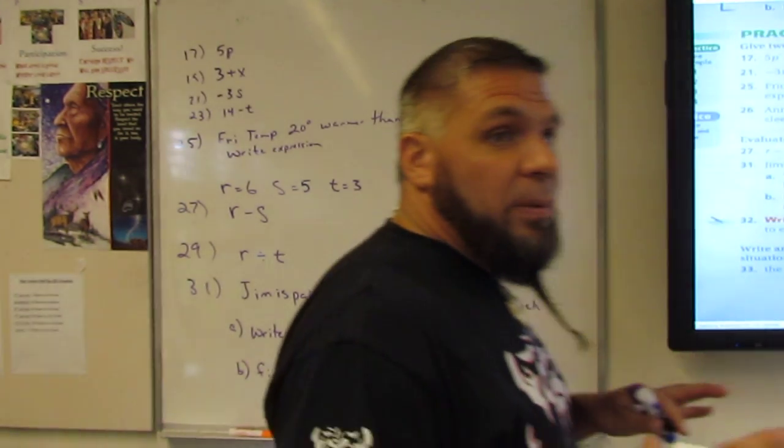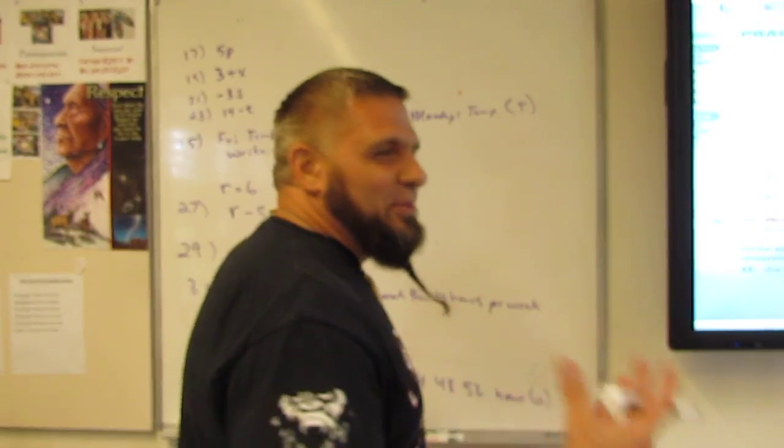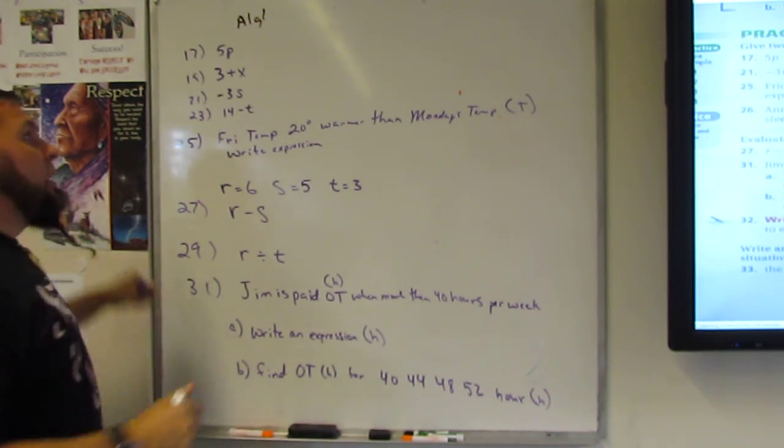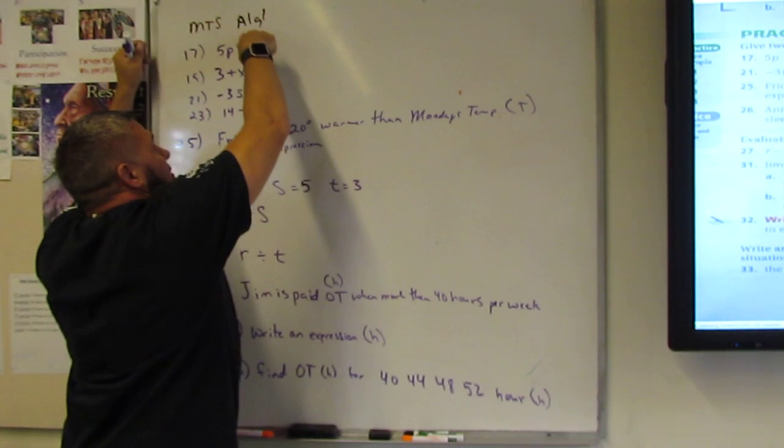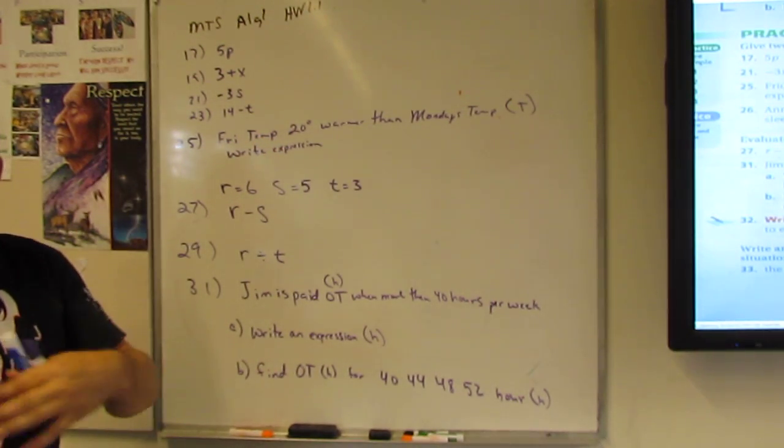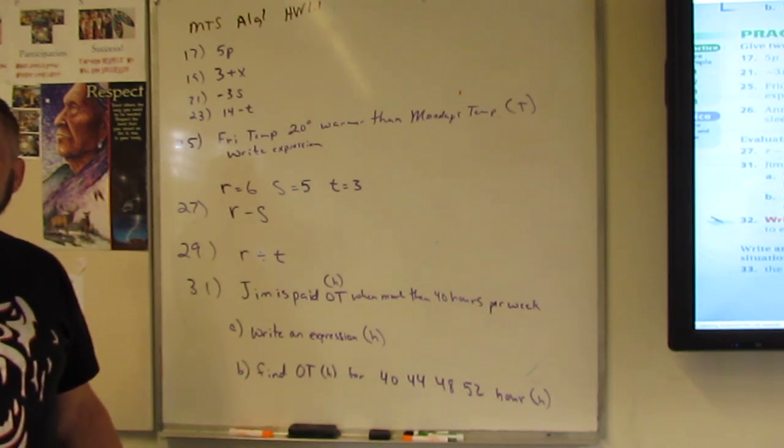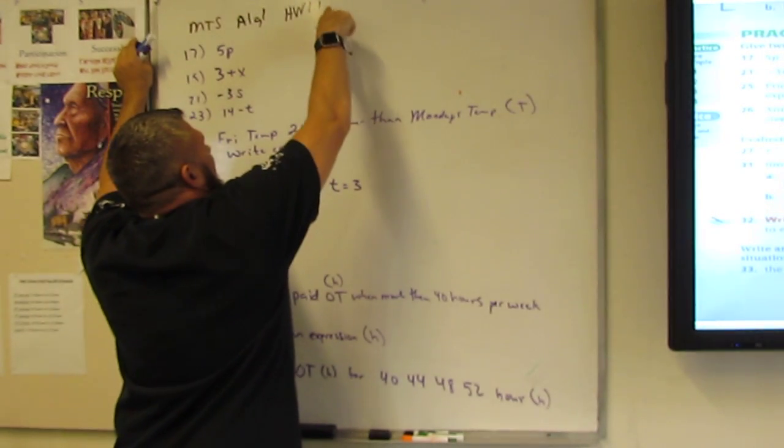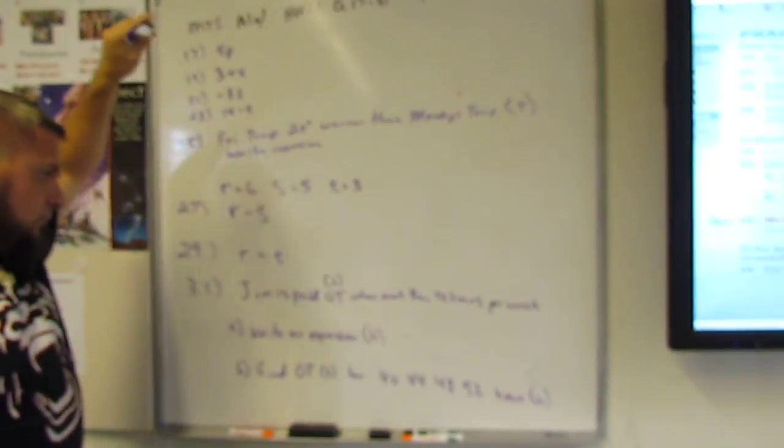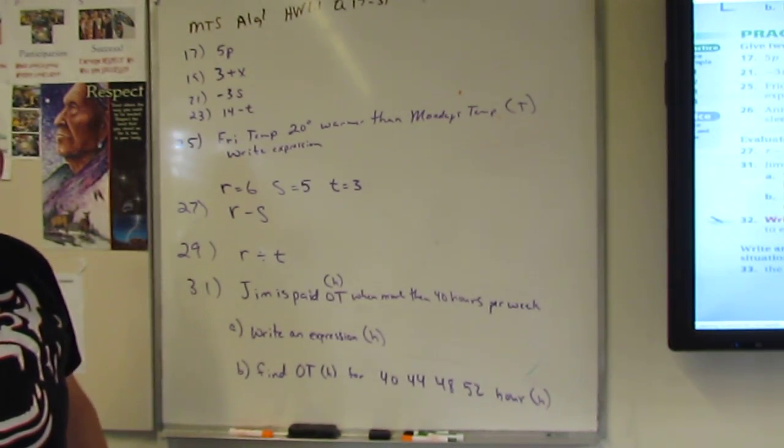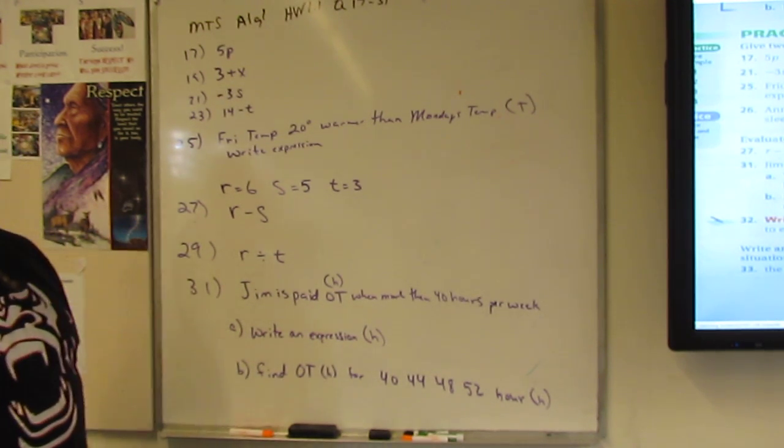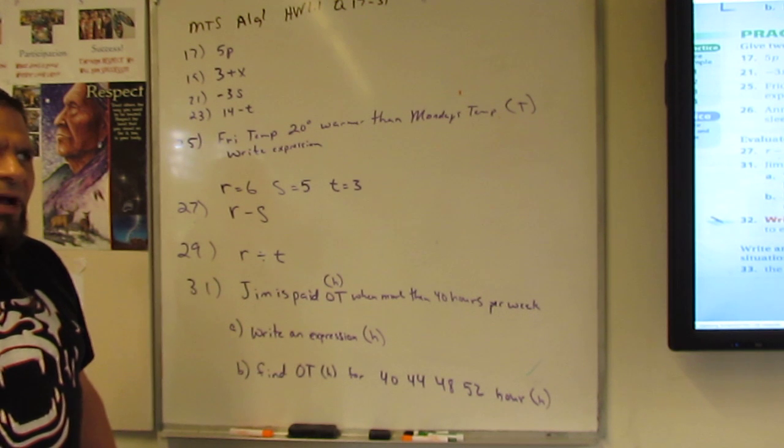All right, when you look at this, don't look on eBay, you're going to look for this on YouTube, right? And you're going to look for ALG1, no space, ALG1, right? MTS space ALG1 space HW 1.1. And that should bring up pretty much every video that we do on 1.1, right? And then part of them are going to say 1.1 questions 17 through, in this case, 31, right?